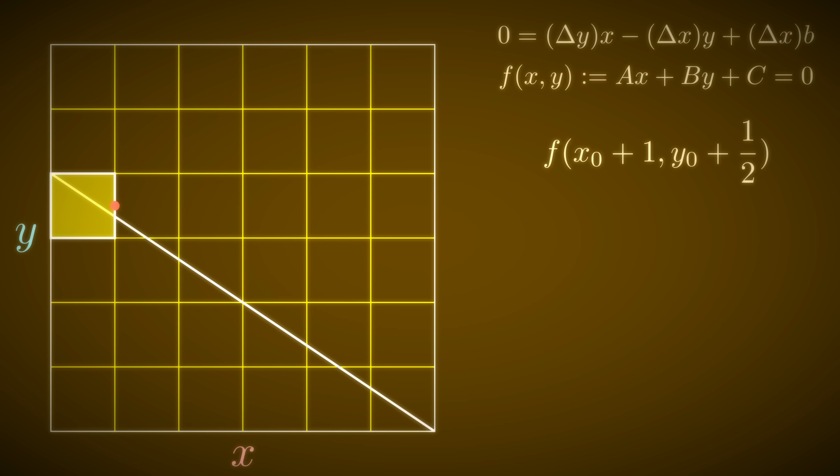We said that if we plug x and y into our equation and get zero, that point should be on the line. But if the result is greater than zero, then our ideal line is below our candidate point. Let's call this case 1.